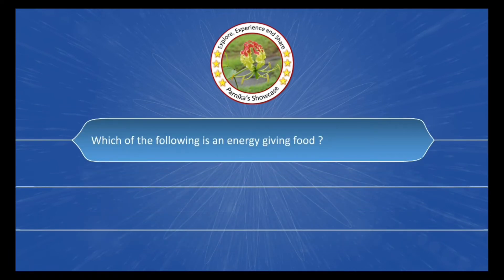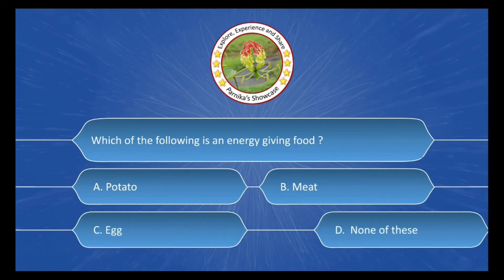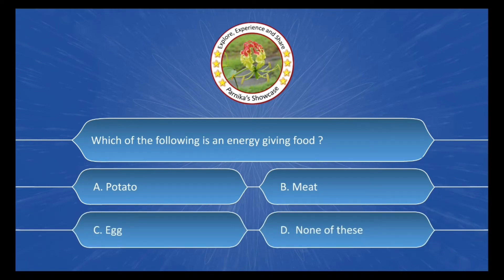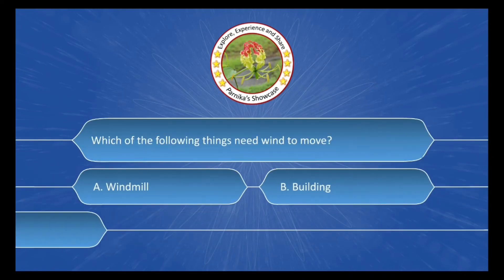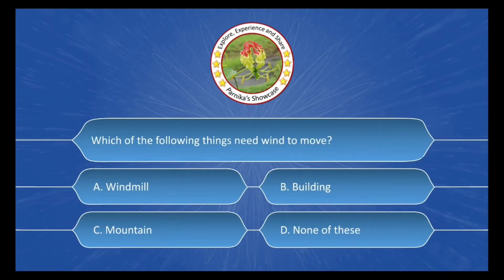Next question: Which of the following is an energy giving food? And the options are: A. Potato, B. Meat, C. Eggs, D. None of these. And the correct answer is Option A. Potato.